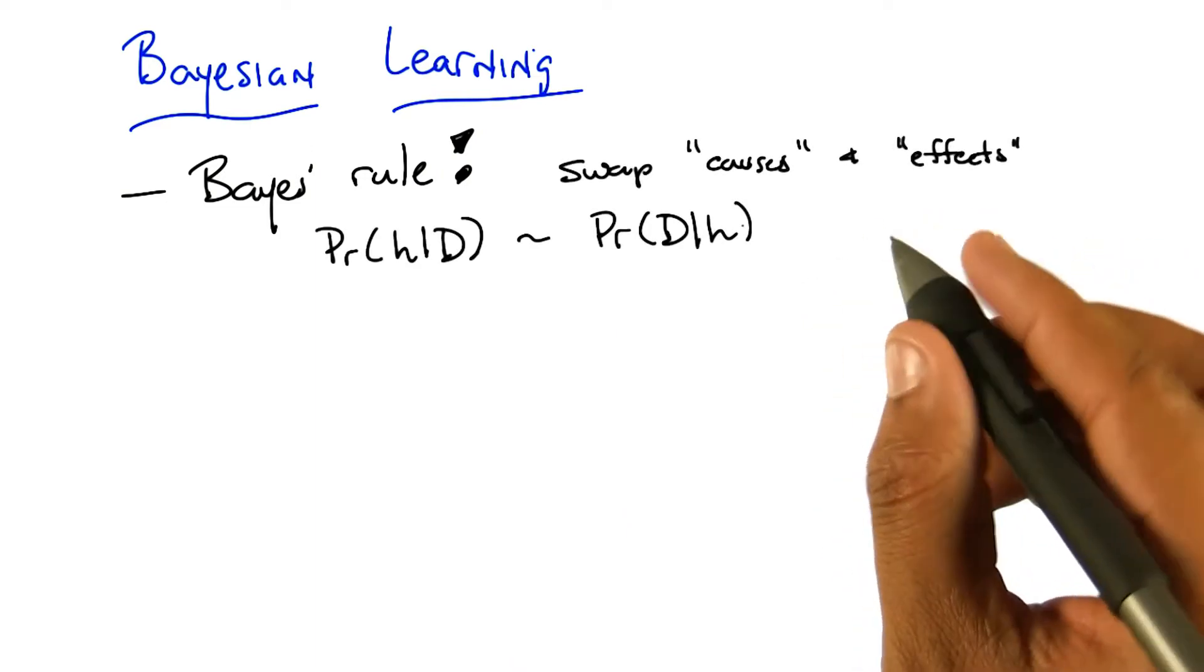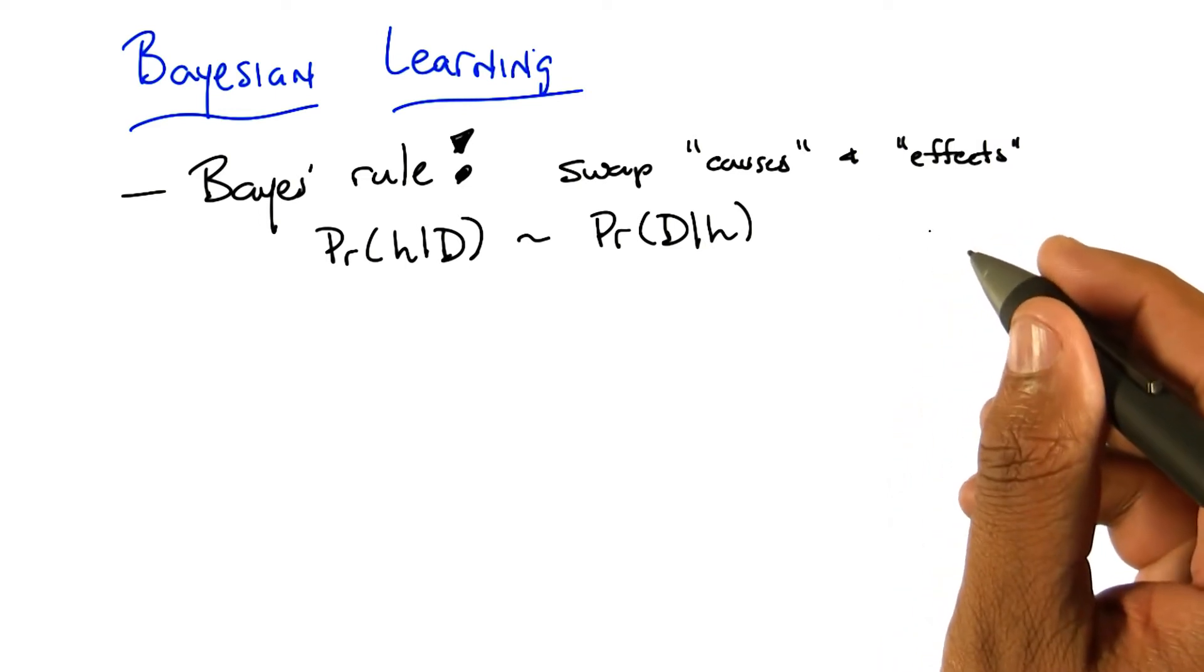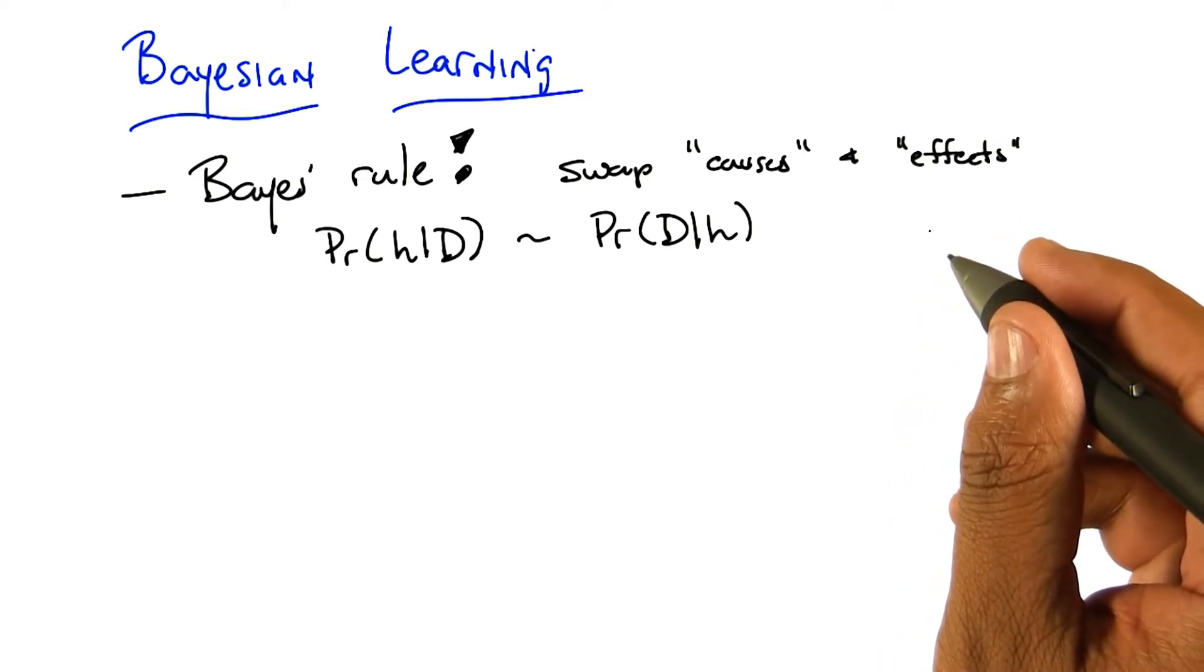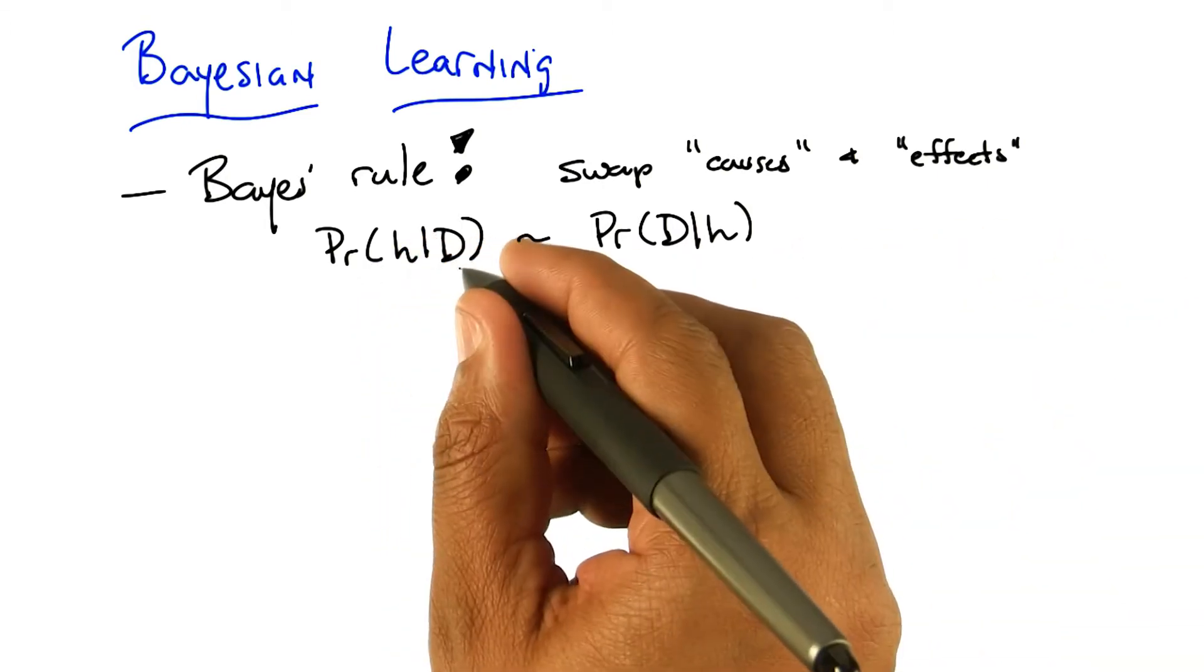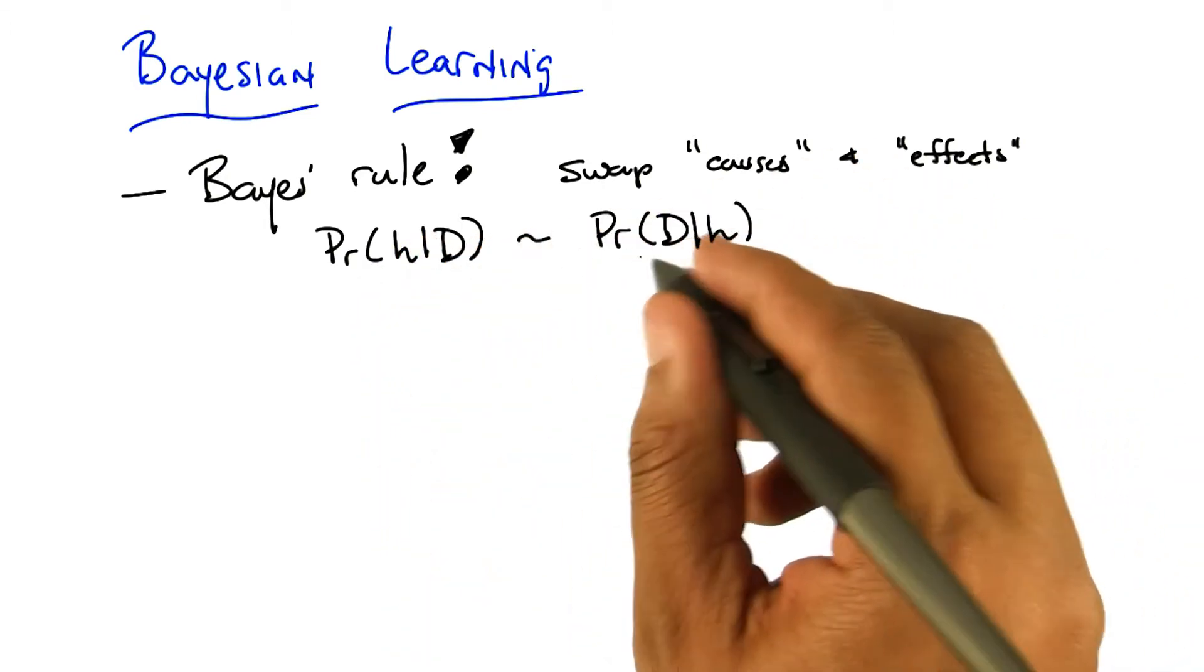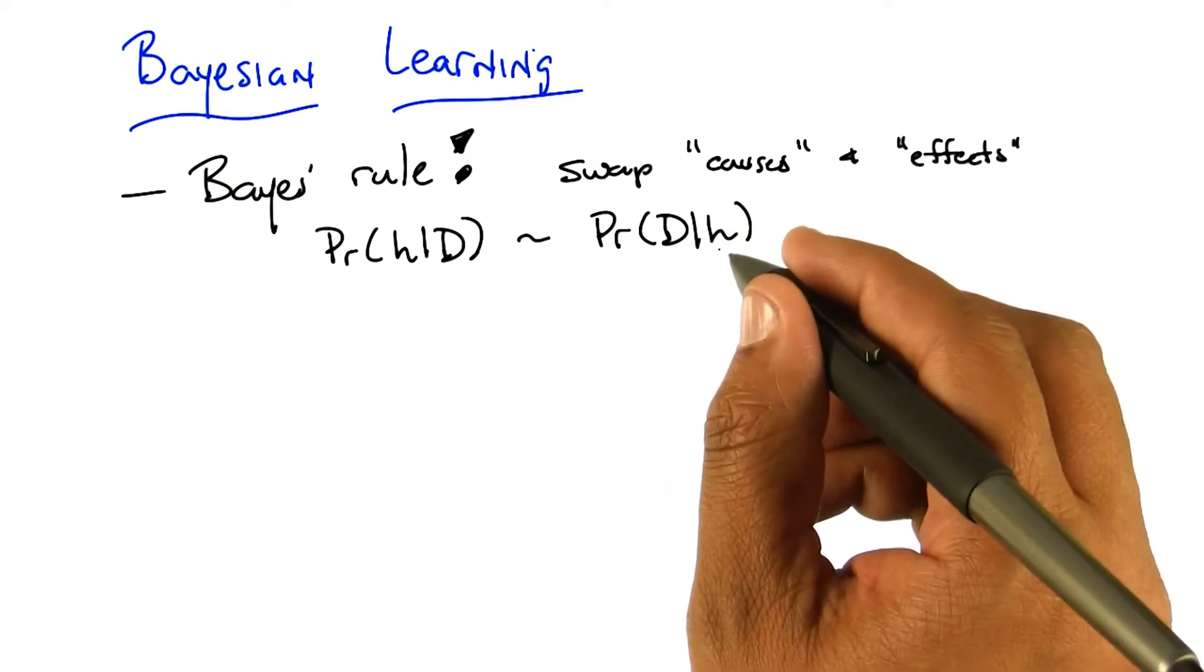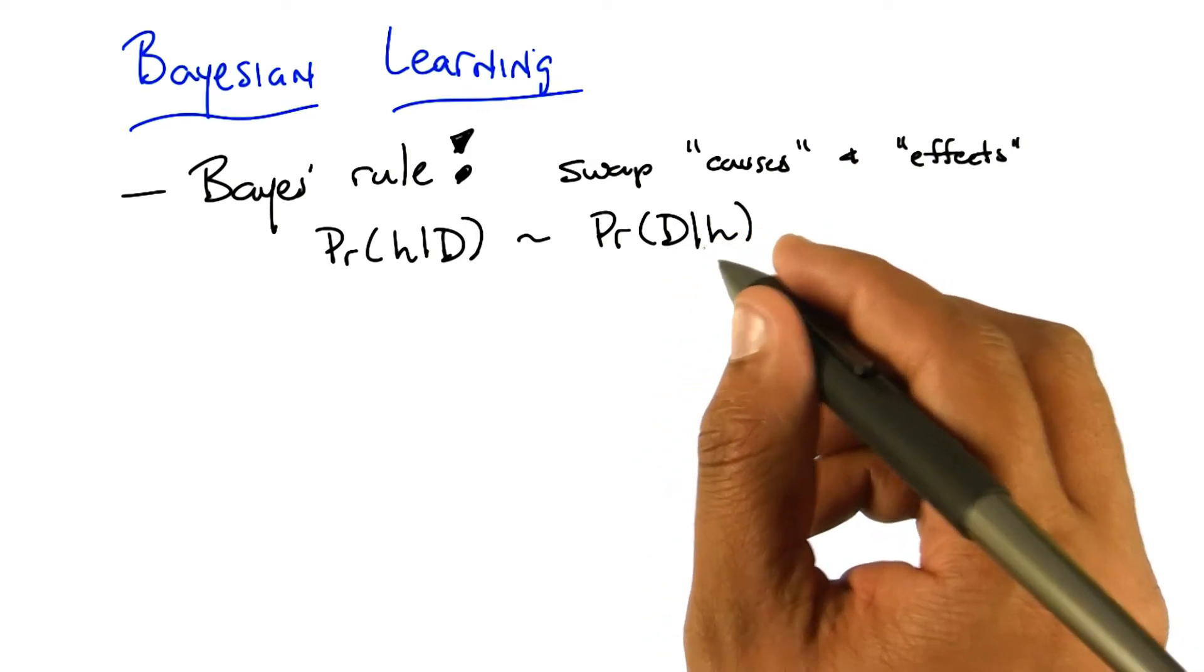So I like the way you put that, Michael, that we're swapping causes and effects. Sort of mathematically, when we think about Bayes' rule, what that really lets us do is instead of having to compute the probability of the hypothesis given the data, we instead get to compute the probability of the data given the hypothesis, which is typically a much easier thing to do.